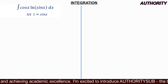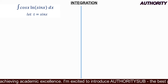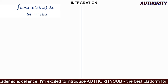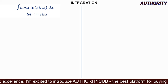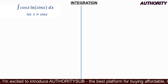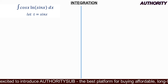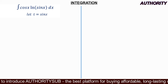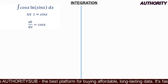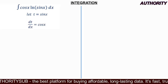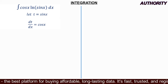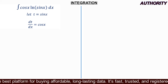Using substitution, we let t = sin(x) — the sin(x) inside the ln. That means we're going to have ln(t). Since t is a function of x, we differentiate t with respect to x, giving us dt/dx = cos(x).